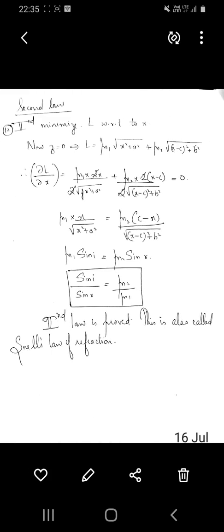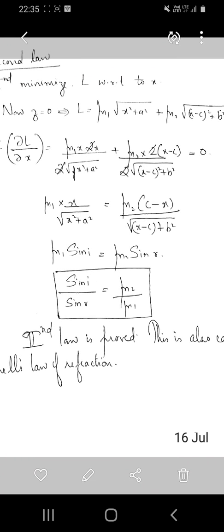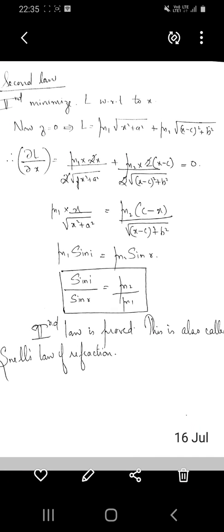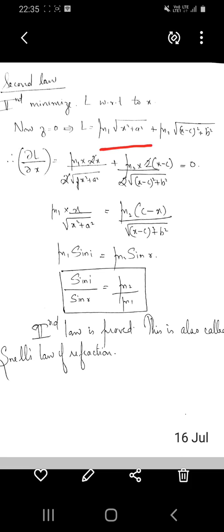To find the second law, we use Z = 0. So L equals mu1·√(X² + a²) plus mu2·√((X - c)² + b²). I wrote down the length AKC without Z because Z = 0, and I differentiate this with respect to X.